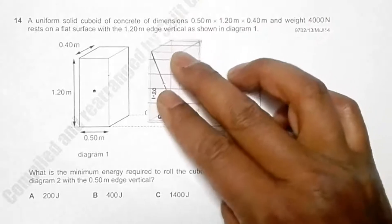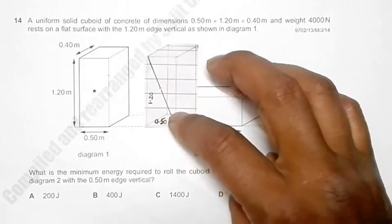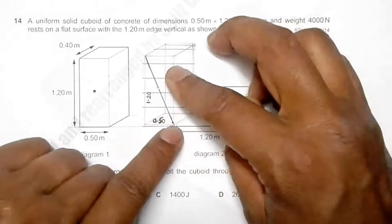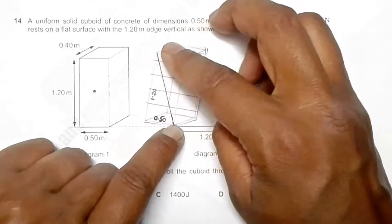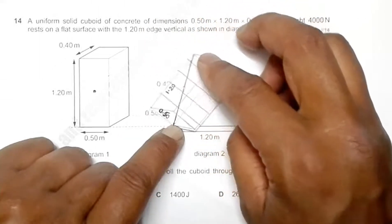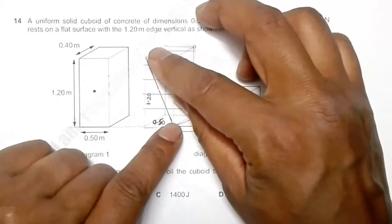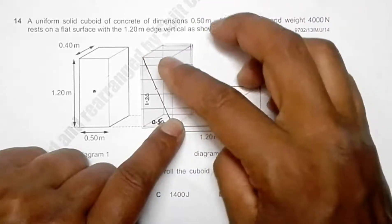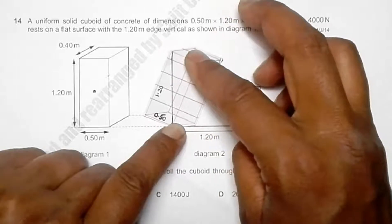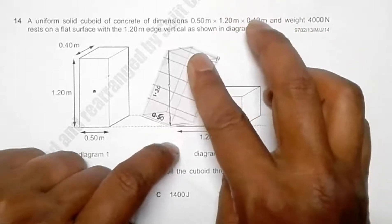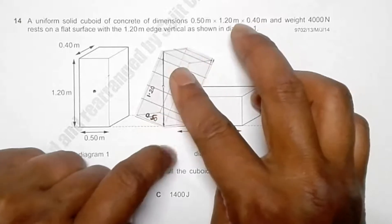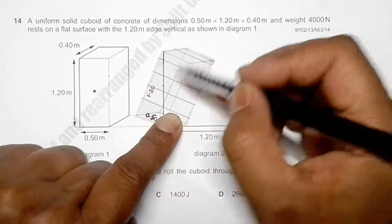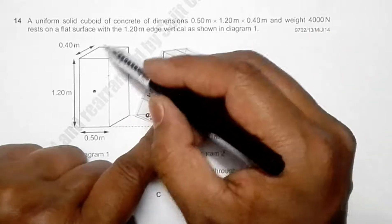To illustrate this, consider the cuboid standing upright. We tip it slightly, pivoting about the bottom corner, until it just reaches the balanced position — the point just before it tips over on its own. At this critical position, the cuboid is slightly raised on one side and the CG has been lifted to its highest point.